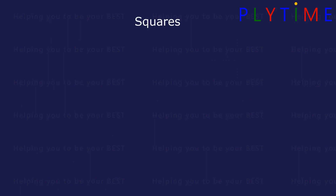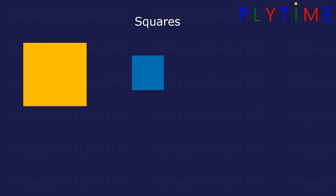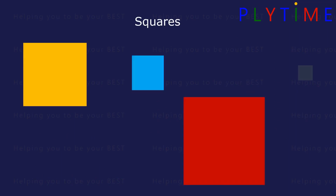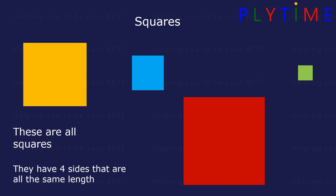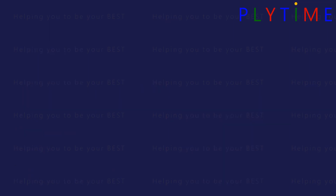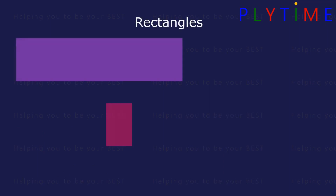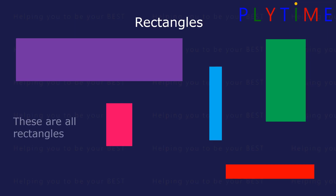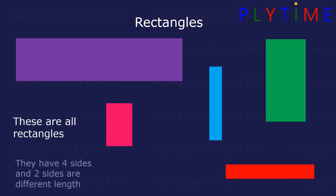Squares. These are all squares. They have four sides and they're all the same length. Rectangles. These are all rectangles. They have four sides and two sides are different lengths.